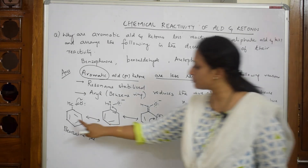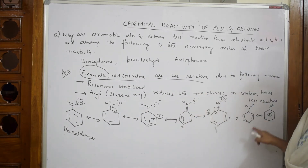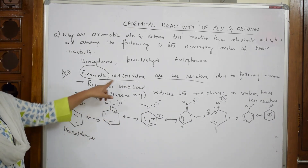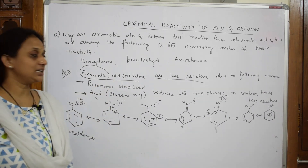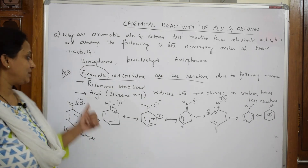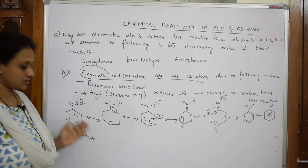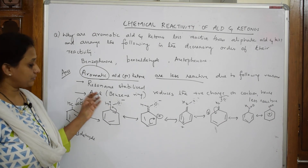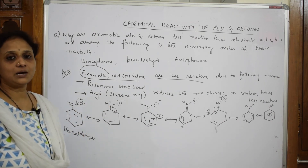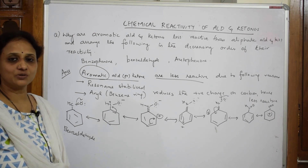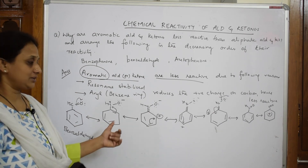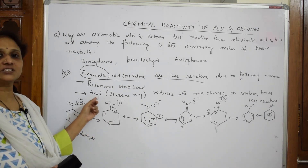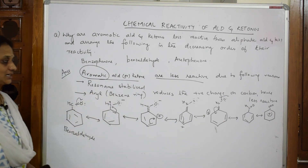Observe carefully: here the pi bond was between positions one and two; in the next structure the pi bond is between two and three — it showed resonance structures. Because of these resonating structures, the aromatic aldehyde is highly stable. If it is highly stable, it is obvious they are less reactive. As I said, the aryl ring reduces the positive charge — it is donating electrons always to the carbon atom. So the nucleophile cannot approach and donate its electrons to that carbon. Already it has excess electron cloud donated by the aryl ring. This reason also justifies that they are less reactive.